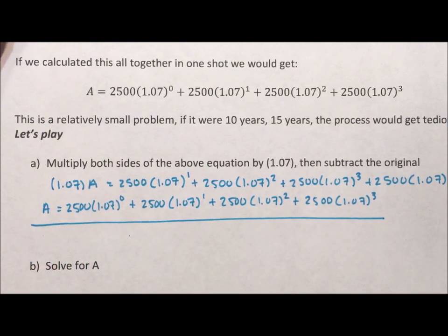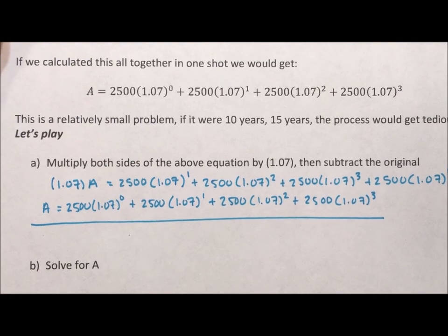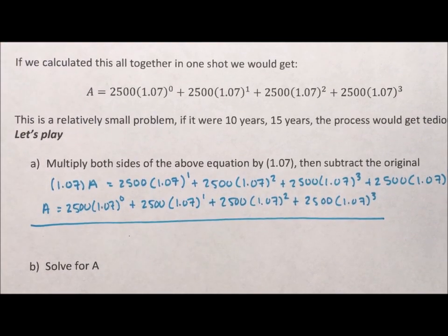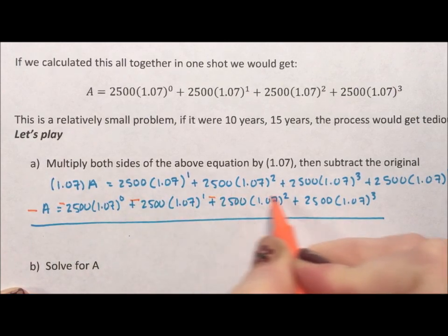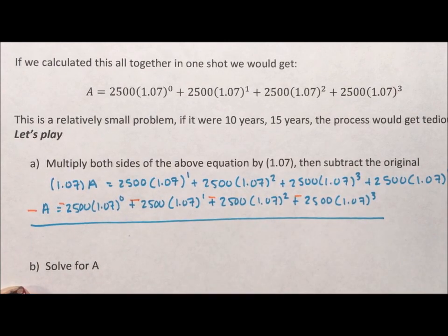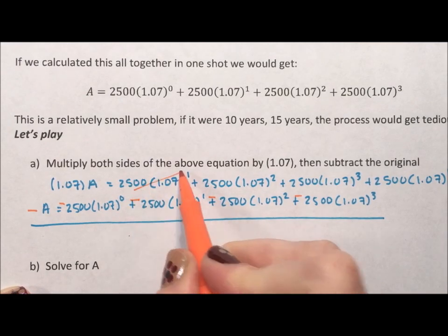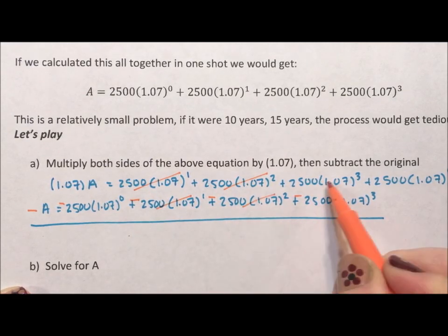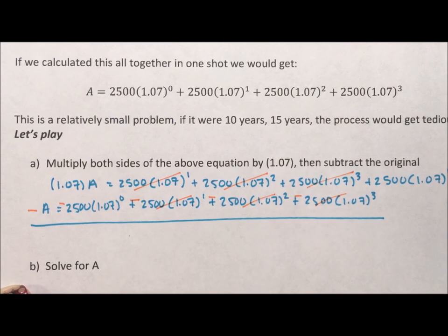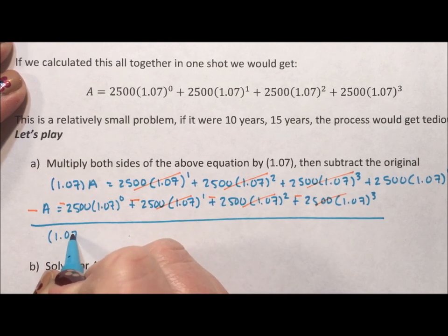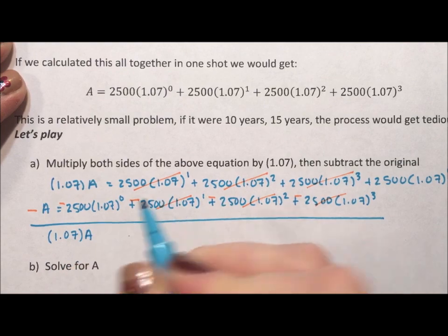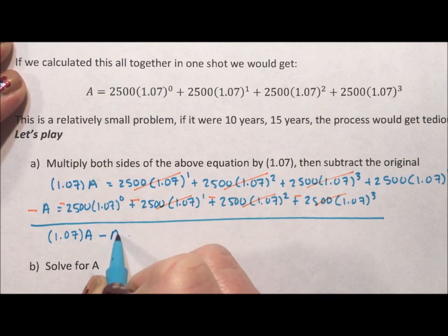So the way I'm going to subtract these and if anyone has seen me subtract, you'll know exactly what I'm about to do. So I'm going to just make all these pluses minus. I'm going to distribute that negative and then I'm going to subtract down. And what's going to happen is the pluses and the minuses are going to nicely cancel. And I'm going to be left with 1.07 times A, which that doesn't really need parentheses, minus A.